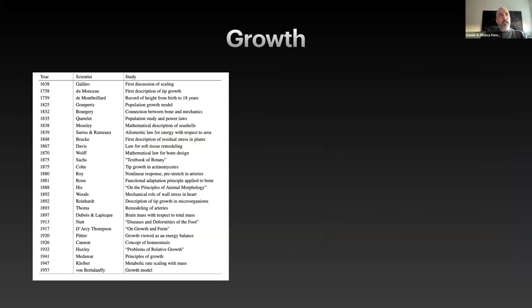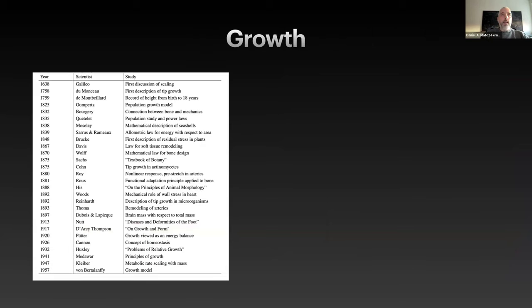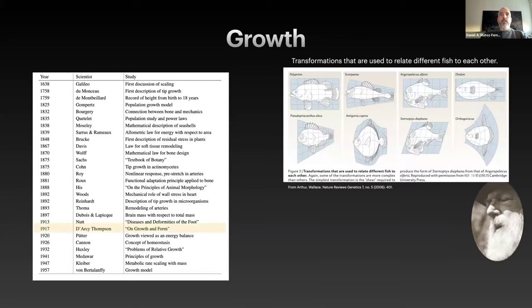If you wanted to see how old this actually is, this goes back to the 1700s — it's a very, very old topic. Perhaps the one that first approached me to this subject was D'Arcy Thompson, who studied how different fish, if you do simple mathematical deformations of a given fish, you can obtain other types of fish — kind of showing that there is some underlying mechanism for growth.